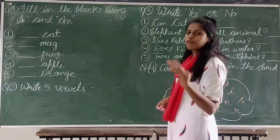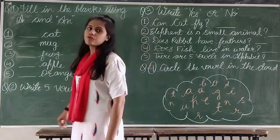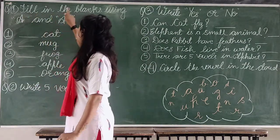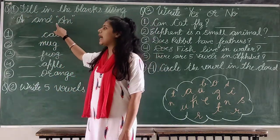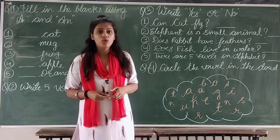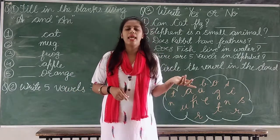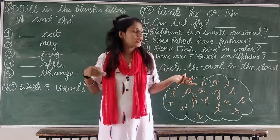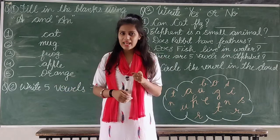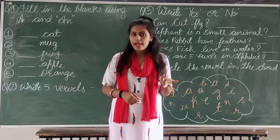In English, four questions are here. So first, question number four is fill in the blanks using A and AN. You all know very well where to use A and where to use AN. You all know, right? Where to use A or AN?